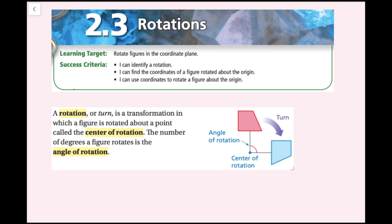In this lesson we're going to be rotating figures in a coordinate plane. The success criteria is: I can identify a rotation, I can find the coordinates of a figure rotated about the origin, and I can use coordinates to rotate a figure about the origin.